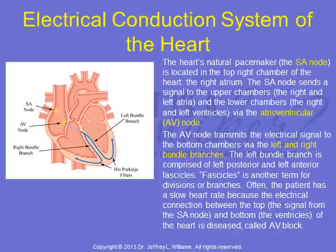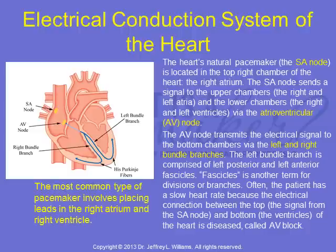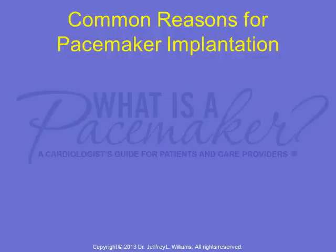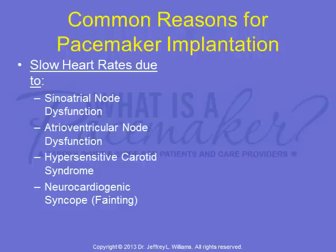Often, the patient has a slow heart rate because the electrical connection between the top — the signal from the SA node — and the bottom, the ventricles, of the heart is diseased, called AV block. The most common type of pacemaker involves placing leads in the right atrium and right ventricle. Common reasons for pacemaker implantation include slow heart rates due to sinoatrial node dysfunction, atrioventricular node dysfunction, hypersensitive carotid syndrome, and neurocardiogenic syncope, also called fainting.